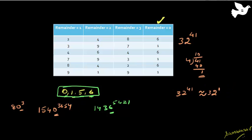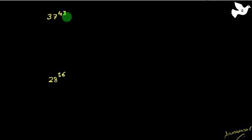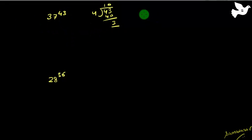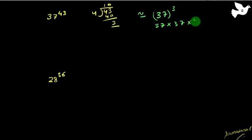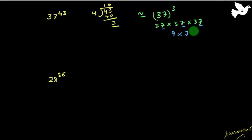Let's take the example 37 raised to the power 43. Divide 43 by 4 — the remainder is 3. So the unit digit of 37^43 is the same as the unit digit of 37^3, which is 37 x 37 x 37. For the unit digit, just take 7 x 7 x 7: 7 x 7 is 49, take unit digit 4; 4 x 7 is 28, take unit digit 8. Wait — 9 x 7 is 63, take unit digit 3. So the unit digit is 3.